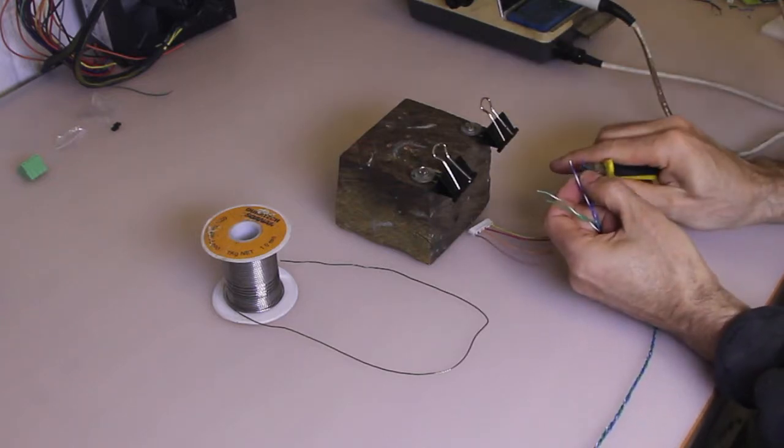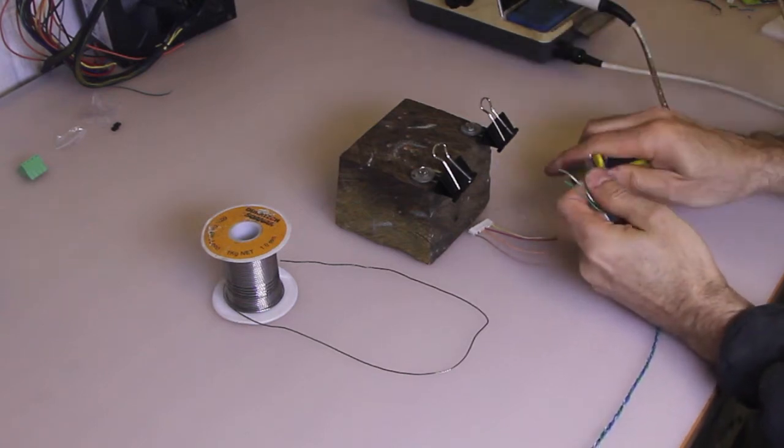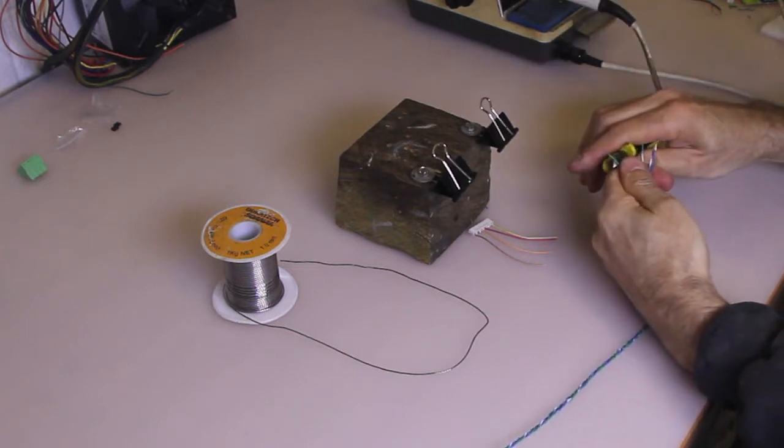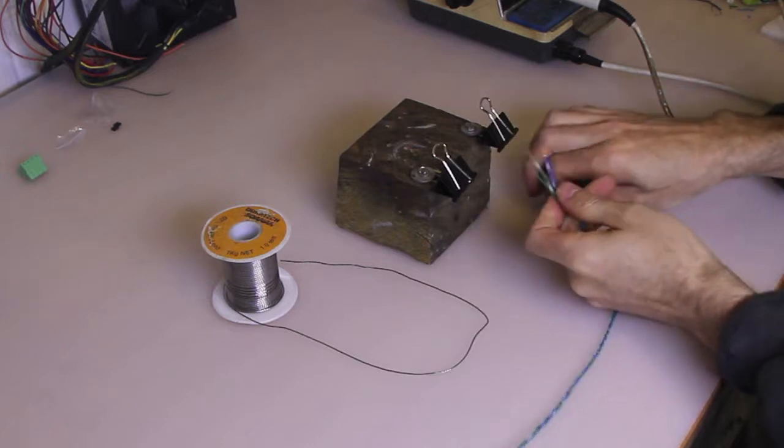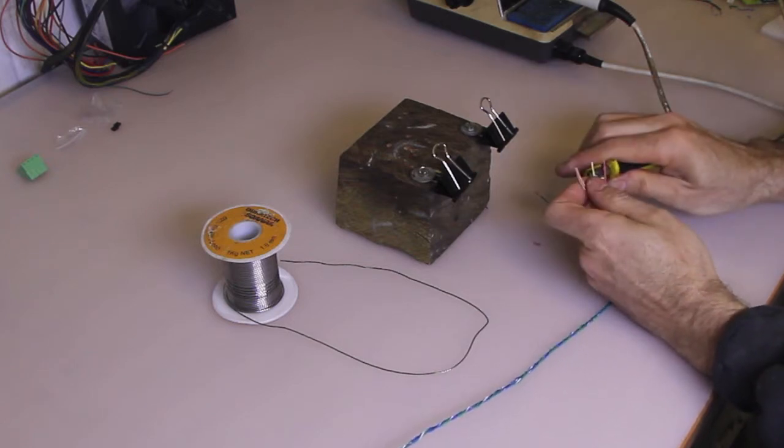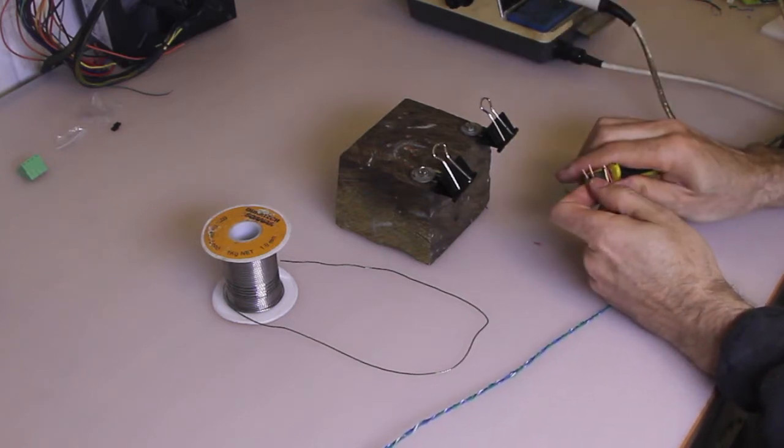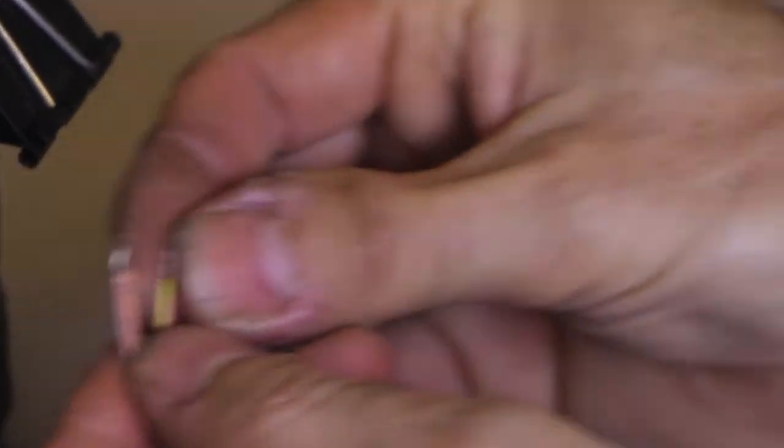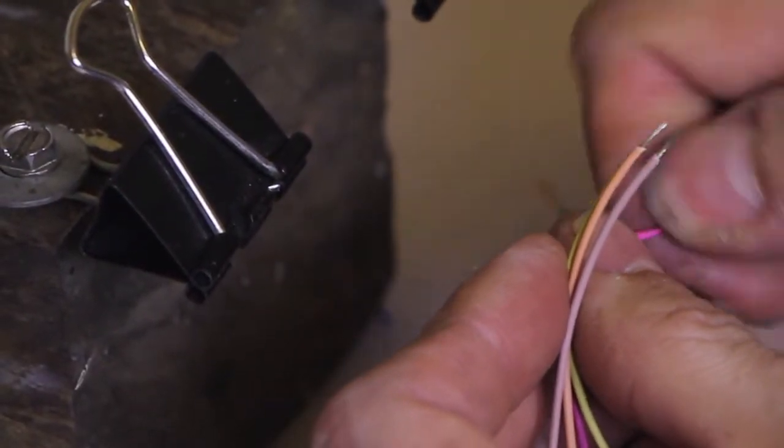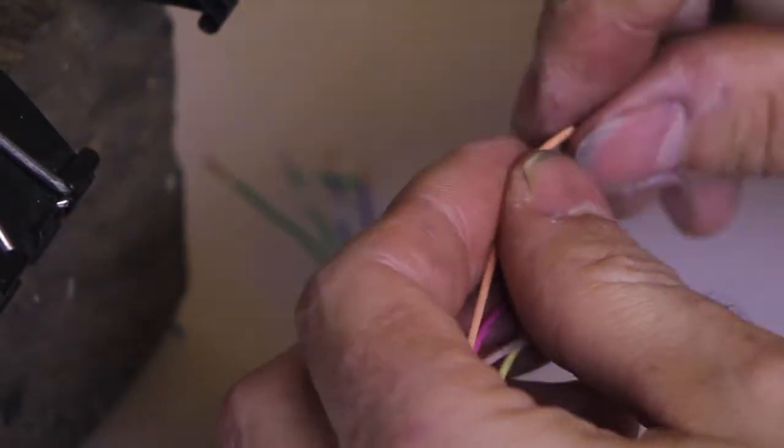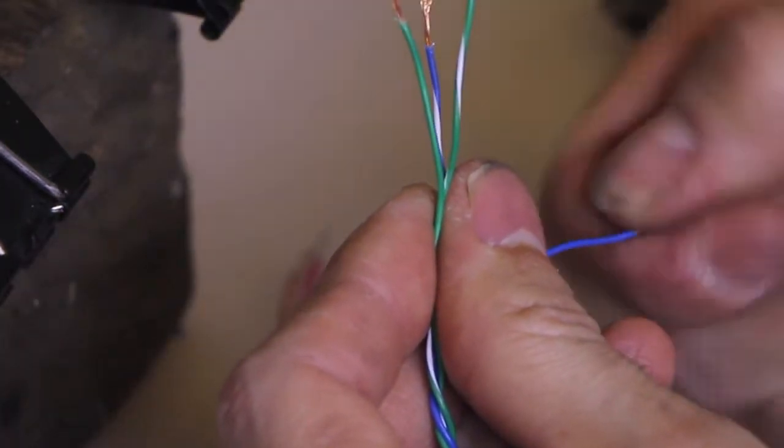Strip back about five to six millimeters. Same on the connector. Twist up the wires. Do the same on the main piece of wire.